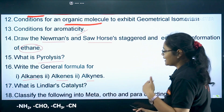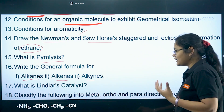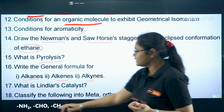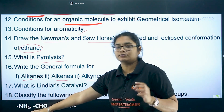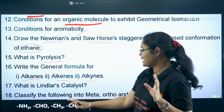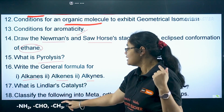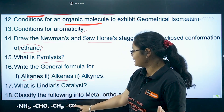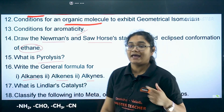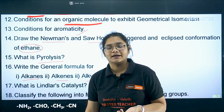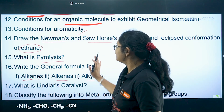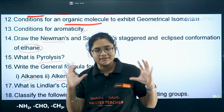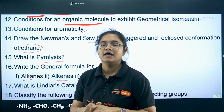And lastly, the effect of substituents — whether they are meta, ortho, or para directing groups. For example: NH2 is an ortho-para director; CHO is meta directing; CH3 is also ortho-para directing; and CN is meta directing. Like this, certain simple questions will be there if you prepare these questions.